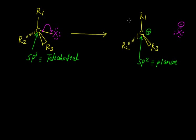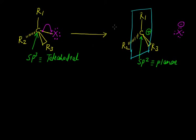Because the carbocation is planar, it means we have one plane. Whatever nucleophile is present, that nucleophile may attack from the front side of this plane as well as the back side of this plane.